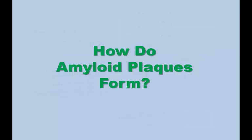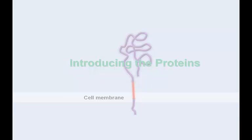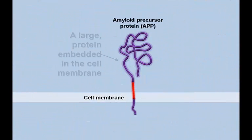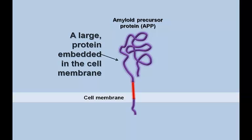How do amyloid plaques form? First, let's introduce the proteins that are involved. Amyloid precursor protein, or APP, is a large protein that is stuck in the membrane of brain cells. It is the source of amyloid beta.